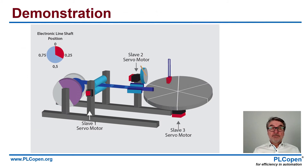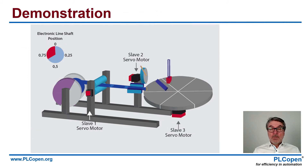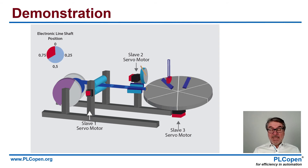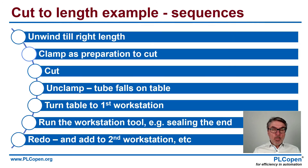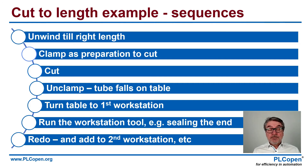This is how it looks. We pull the tube out, cut it, clamp it, cut it, put it on the table, and start working on the table while it is moving. So you have several sequences: we unwind to the right length — that's the tube. We clamp as preparation to cut, we cut, we unclamp, the tube falls on the table, the turn table goes to the first workstation. We run the workstation tool, sealing at the end, and then we redo it — starting another sequence of cutting the tube to the right length.